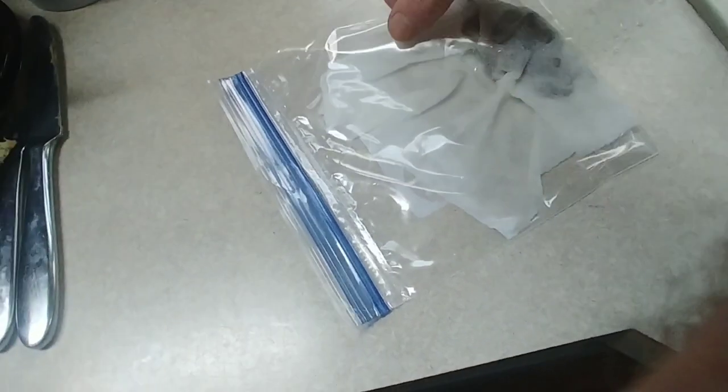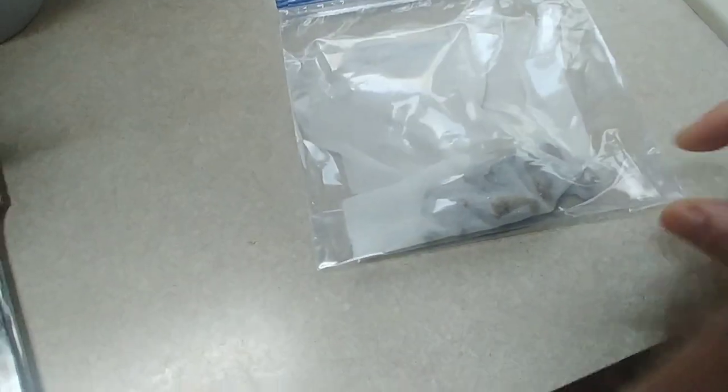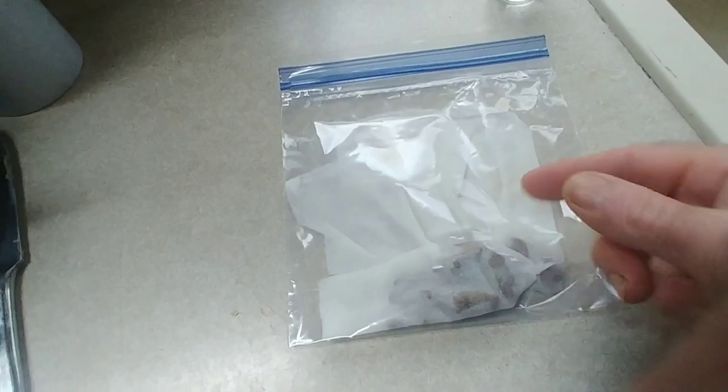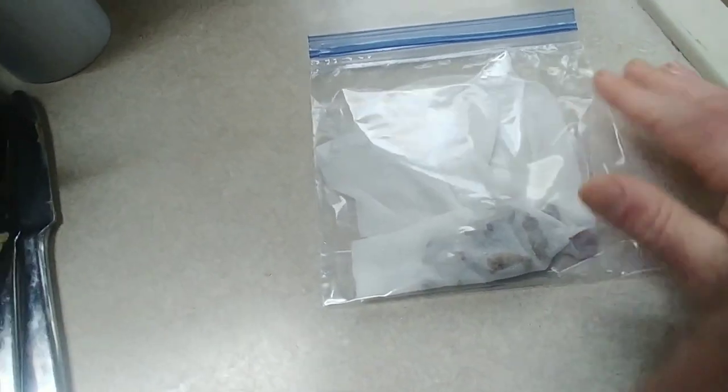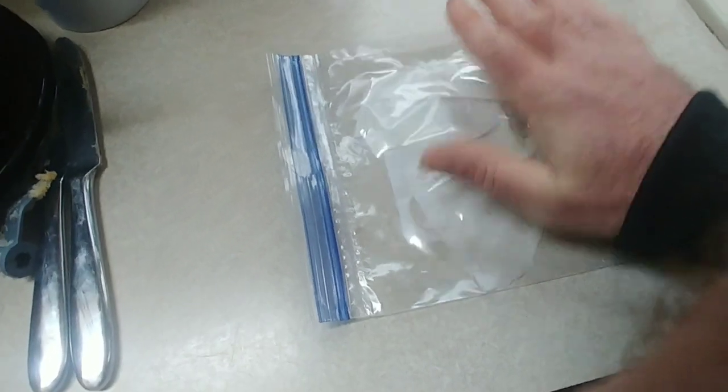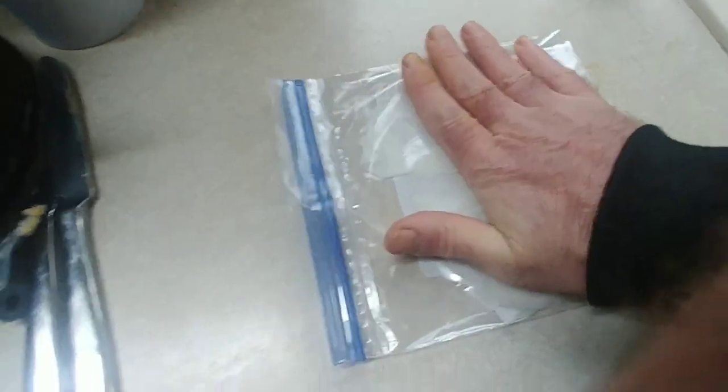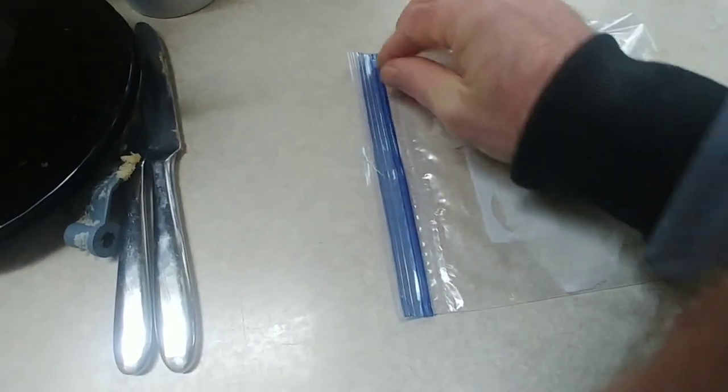So now I've got the paper towel with the seeds folded over onto itself, the paper towel folded over onto itself with the seeds inside the ziplock bag. You want to squeeze out as much air as possible, then seal the end of it.